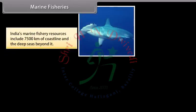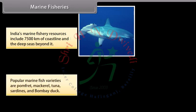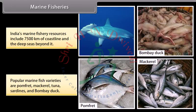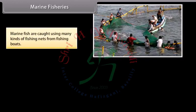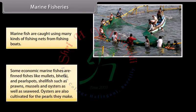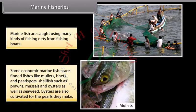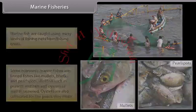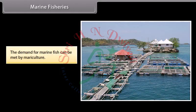India's marine fishery resources include 7,500 km of coastline and the deep seas beyond it. Popular marine fish varieties are pomfret, mackerel, tuna, sardines and Bombay duck. Marine fish are caught using many kinds of fishing nets from fishing boats. Some economically important marine fish include finfish like mullets, betki and pearl spots, shellfish such as prawns, mussels and oysters, as well as seaweed. Oysters are also cultivated for pearls. The demand for marine fish can be met by mariculture.